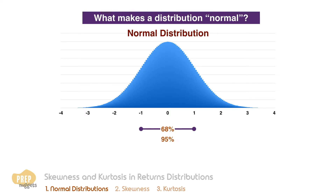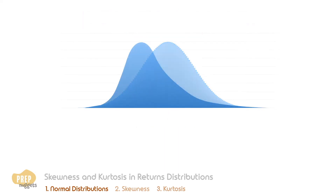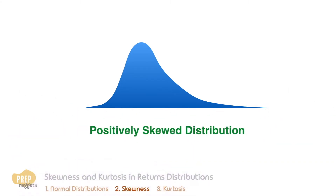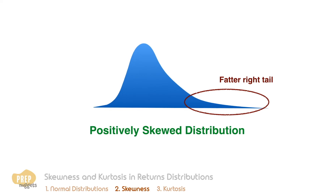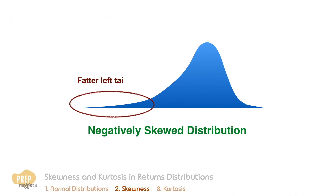95 percent of observations lie between plus or minus two standard deviations, and 99 percent between three standard deviations. A normal distribution is symmetrical on both sides of its mean. Some return distributions, however, are not symmetrical. Skewness is the extent to which a distribution is not symmetrical. A positively skewed distribution is characterized by many outliers in the right tail — it's skewed to the right because of its long right tail. Conversely, a negatively skewed distribution is characterized by many outliers in the left tail.